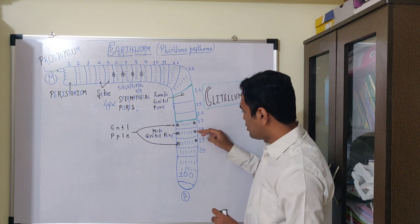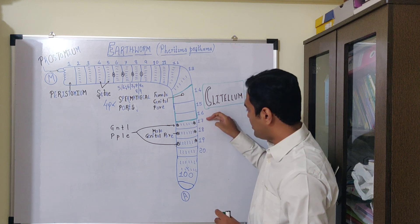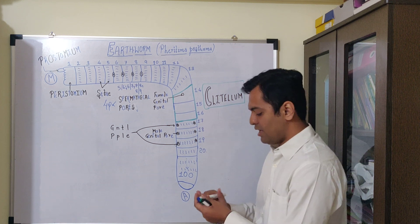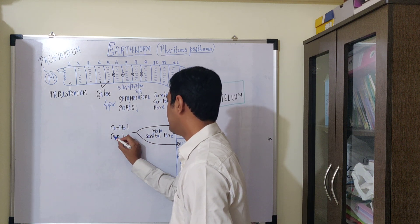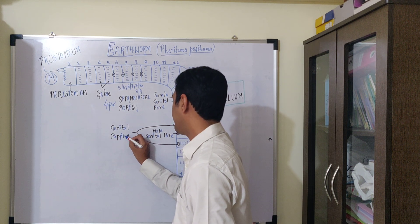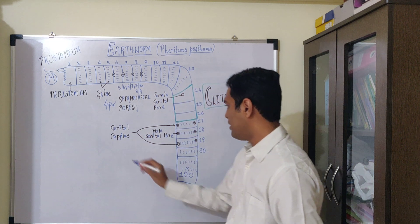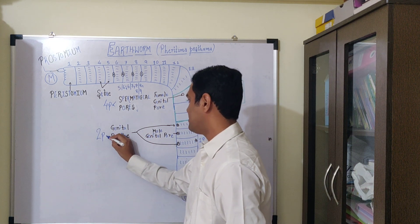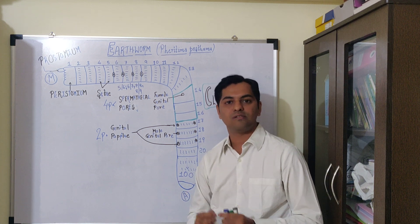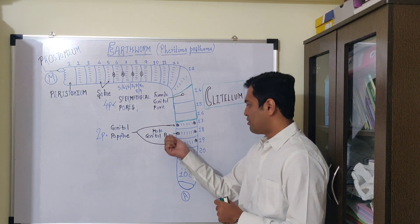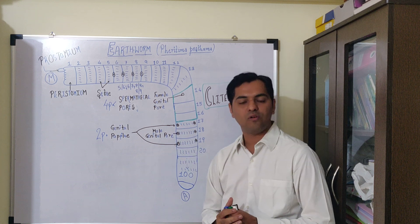Adjacent to the male genital pore on the 17th and 19th segment are structures in pairs known as genital papillae. These genital papillae, total two pairs, mainly discharge fluids from sex glands. From male genital pore there is discharge of sperm cells.